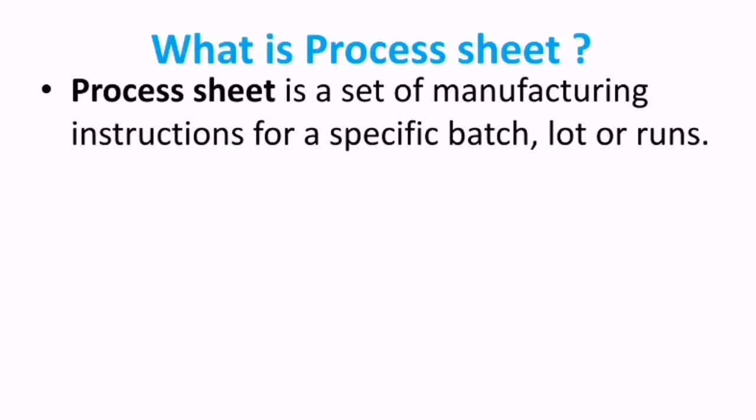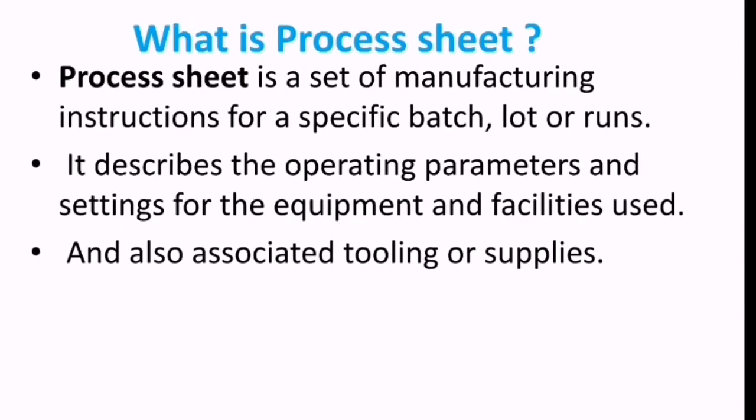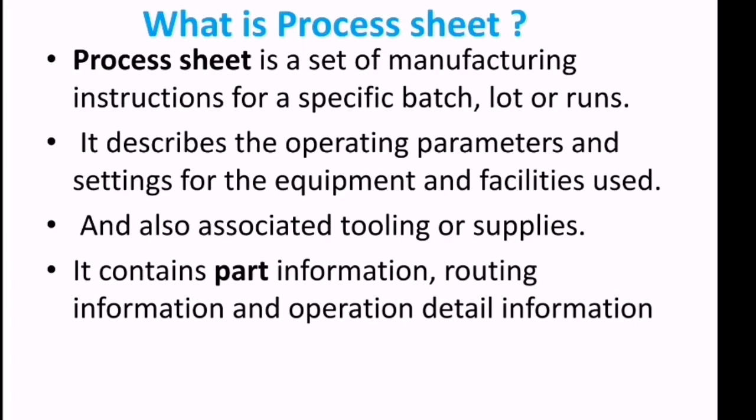A process sheet is a set of manufacturing instructions for a specific batch, lot, or run. It describes the operating parameters and settings for equipment and facilities used, as well as associated tooling and supplies. It contains part information, routing information, and operation details.